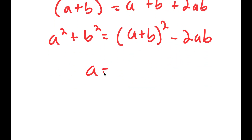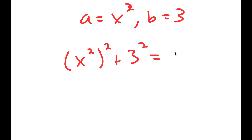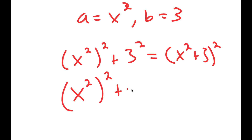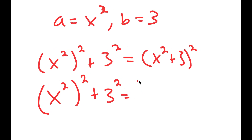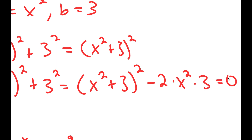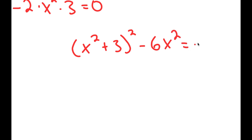So this means that a is equal to x squared and b is 3. Going back over here, I get x squared to the power of 2 plus 3 squared, which turns into x squared to the power of 2 plus 3 squared equals x squared plus 3 squared minus 2 times x squared times 3, is equal to 0. So now from here, I get x squared plus 3 squared minus 6x squared is equal to 0.